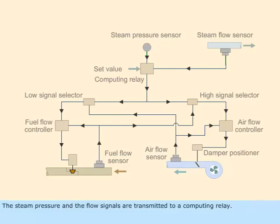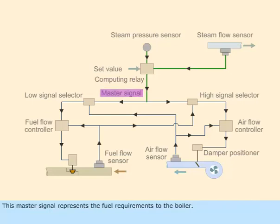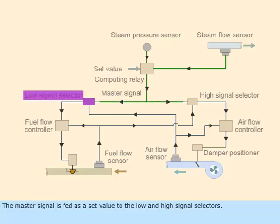The steam pressure and the flow signals are transmitted to a computing relay. The computing relay generates the master signal depending on the load of the boiler. This master signal represents the fuel requirements to the boiler, and is fed as a set value to the low and high signal selectors.